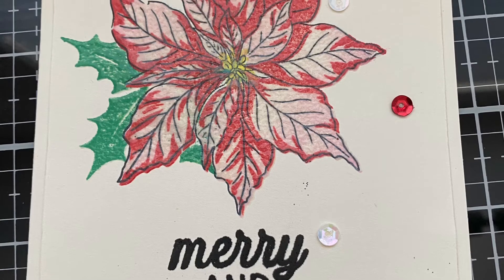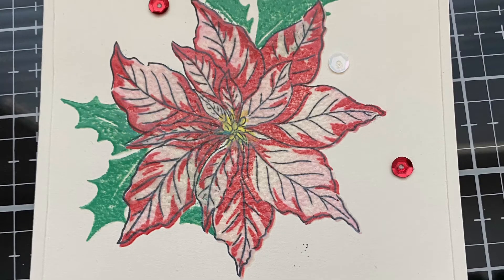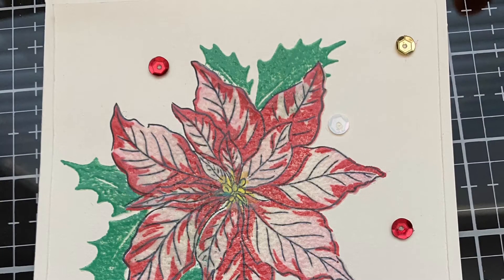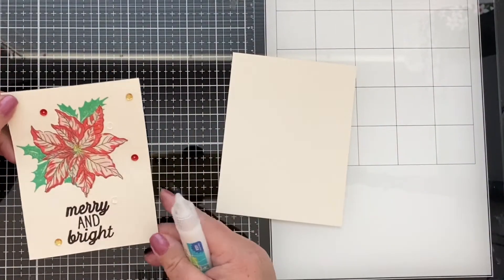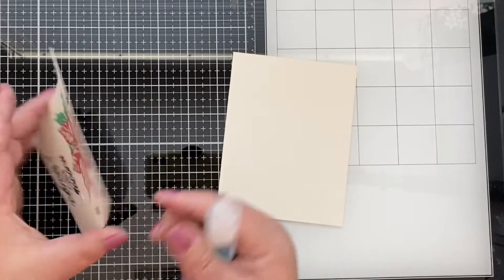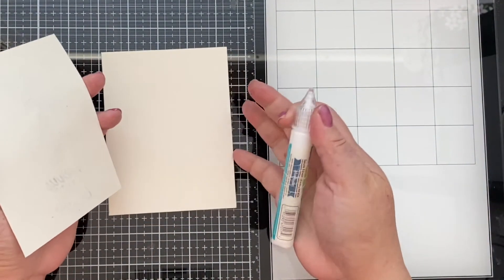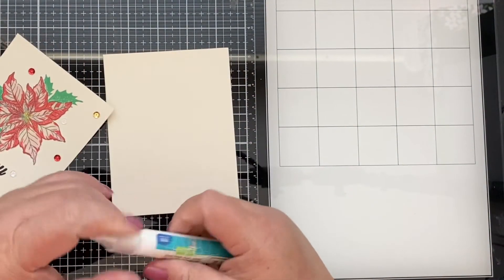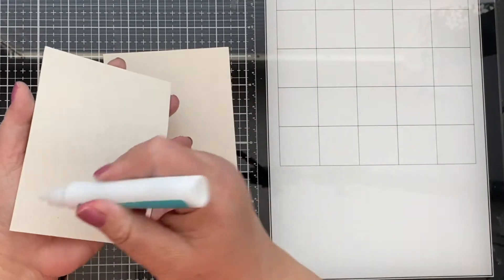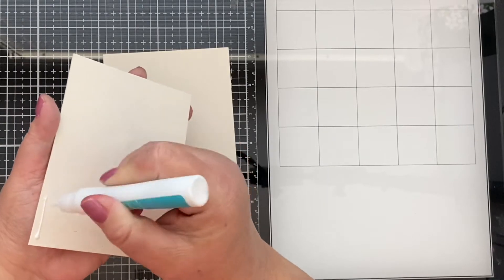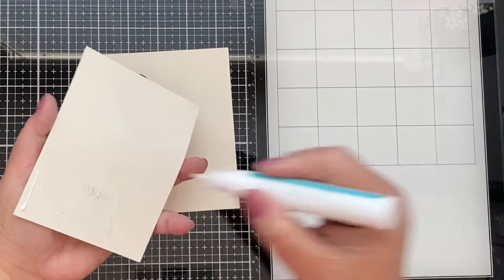There you go guys, isn't that cute? Okay guys, I didn't get to show you but I did add red, yellow or gold, and white sequins on the card. Okay guys, it's time to put our card together. So I have this base here, it's from an off-white or ivory colored cardstock, and I'm gonna go ahead and put our card together here.